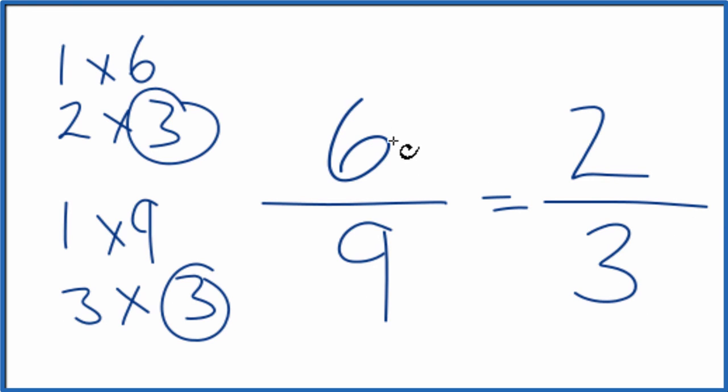And we're done. We've simplified 6 ninths down to 2 thirds. And again, these are equivalent fractions. If you divide 6 by 9 or 2 by 3, you're going to get the same number. They're equal, it's just that we've simplified 6 ninths down to 2 thirds.